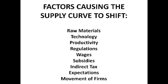Moving on to expectations: if prices are expected to fall, firms think they should produce now whilst they can still afford to produce. So there's a massive increase in supply, causing a right shift of the supply curve.